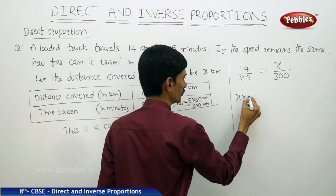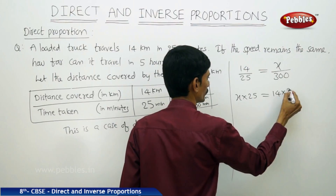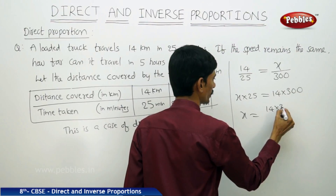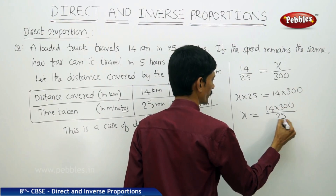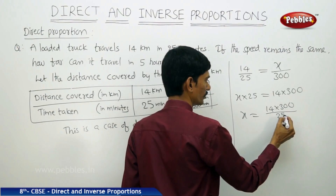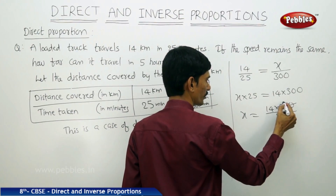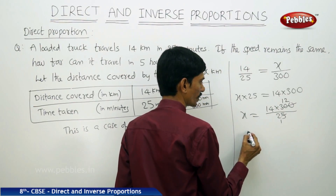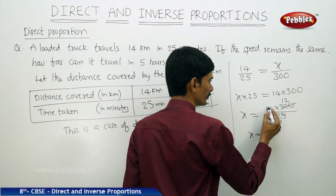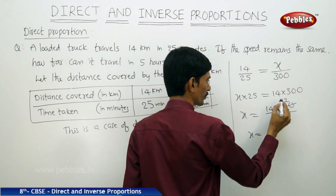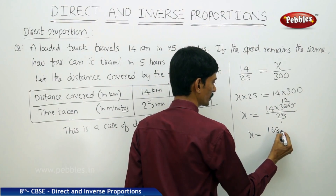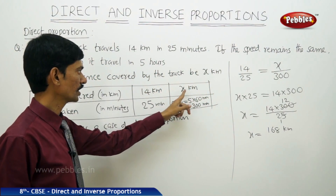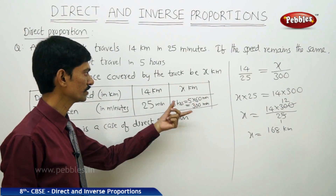By cross multiplication: x into 25 equals 14 into 300. So x equals 14 into 300 divided by 25. Canceling 25 and 300 gives 12, so x equals 14 into 12. That is 168 kilometers. Therefore, the truck travels 168 kilometers in 300 minutes, meaning in 5 hours.